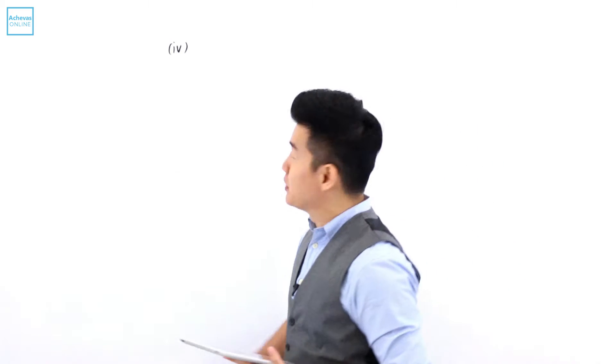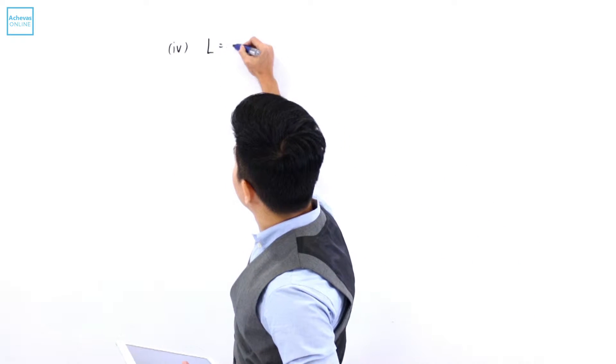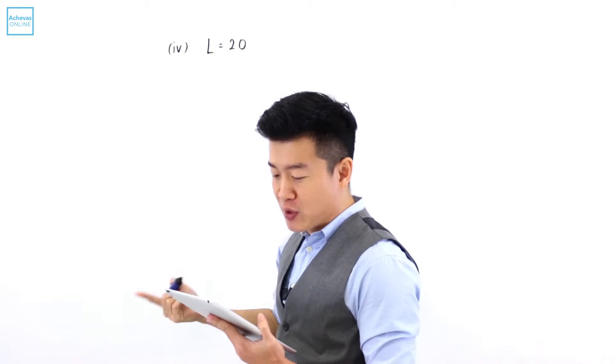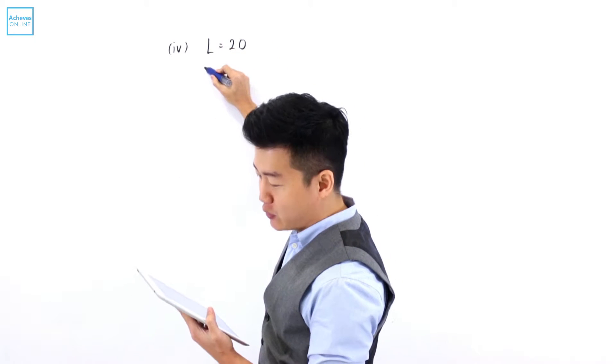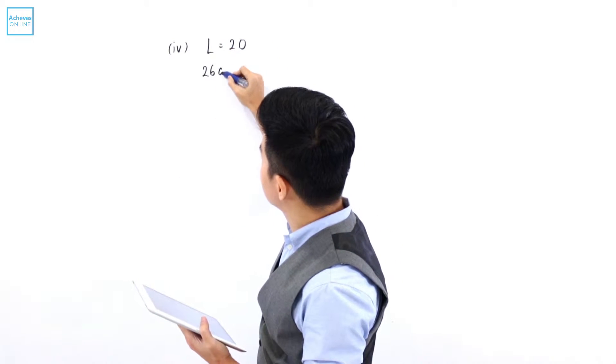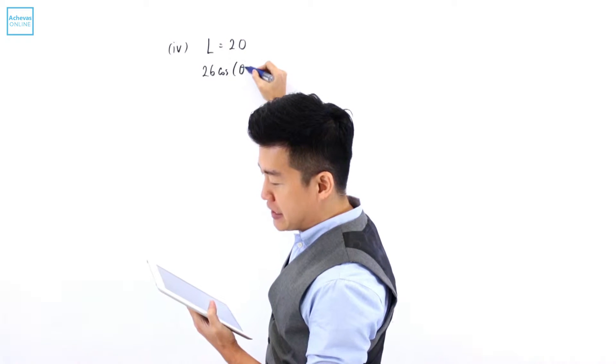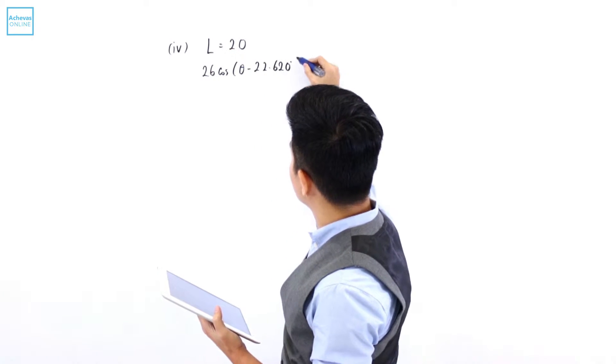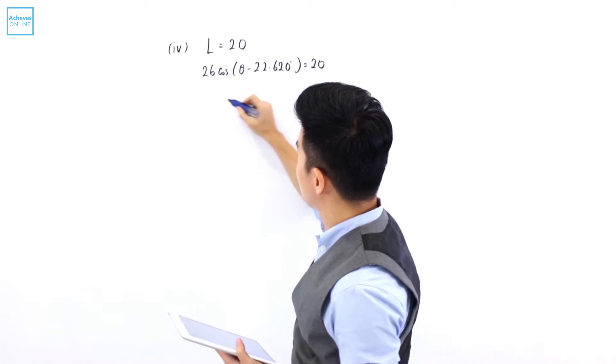And now in part four, L is given to me as 20. And by making use of what we have solved previously, I'm going to express L as 26 cosine of theta minus 22.620 degrees, and this is equal to 20.